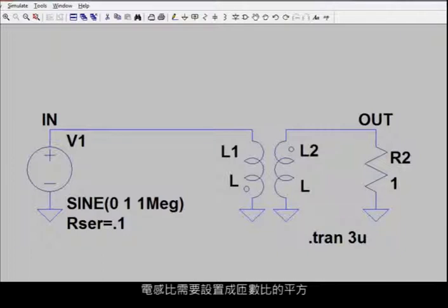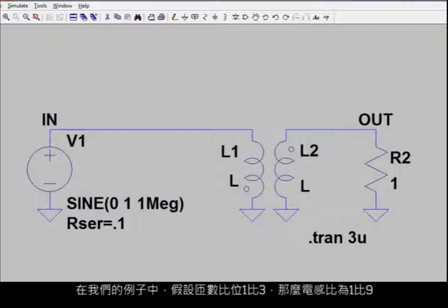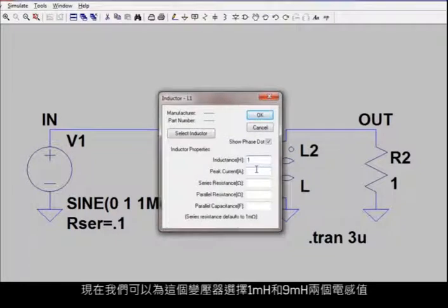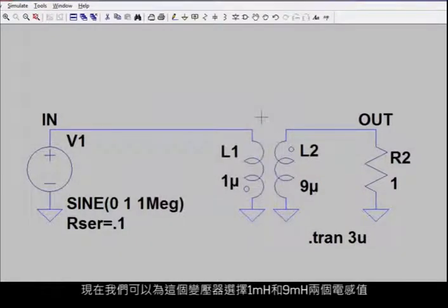Let's say in our example you want a 1 to 3 turns ratio. We square that, we get a 1 to 9 inductance ratio, which now allows us to go ahead and select 1 microhenry and 9 microhenrys for our two values of inductance for this transformer.